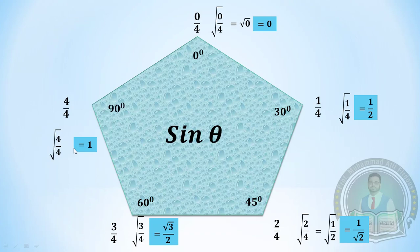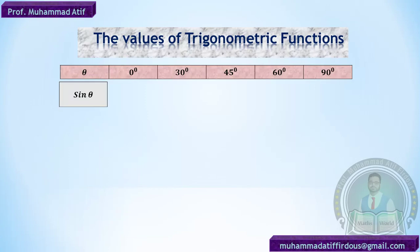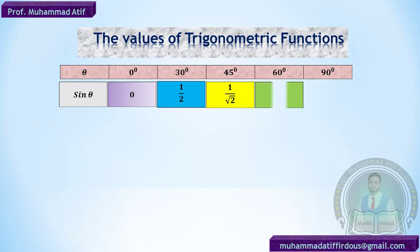It's a very simple way to find the values of sine theta. So: sin 0° = 0, sin 30° = 1/2, sin 45° = 1/√2, sin 60° = √3/2, and sin 90° = 1. The next step is to find the values of cos theta.